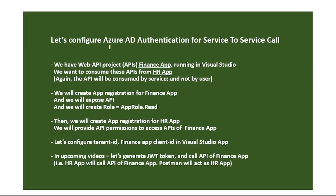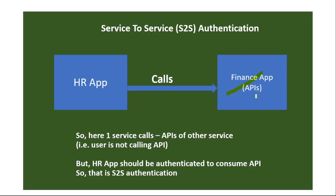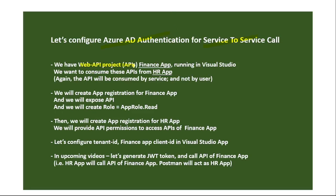In this video let's configure Azure AD authentication for service to service, that is S2S calls. Our requirement is we have a finance app with APIs, and an HR app that wants to consume those APIs. One service is calling APIs of another service — a user is not calling the API — so we need to make sure the HR app is authenticated. Now let's look at the steps to configure Azure AD authentication.